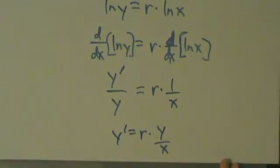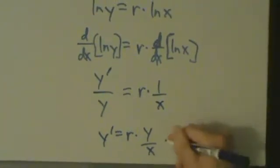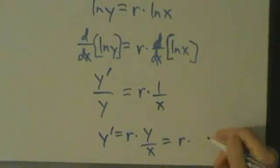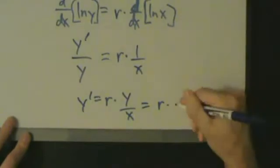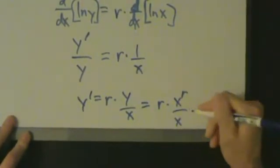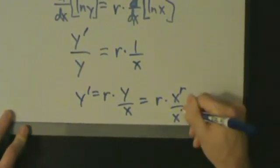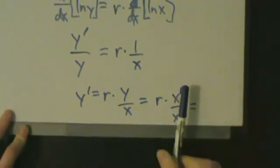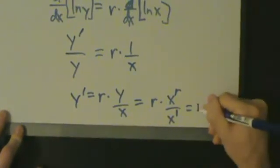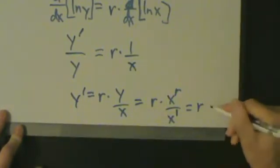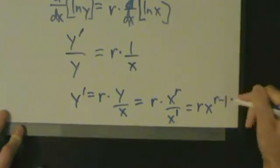But we want our final answer to be expressed in terms of just x and not y. So what is y? Well, first of all, it's going to be r times y. What's y? Well remember, y is x to the r. So this is r times x to the r divided by x. And x is just x to the first. So x to the r over x to the first, you're dividing with the same base, so you subtract the exponents. So that's going to be r times x to the r minus 1.